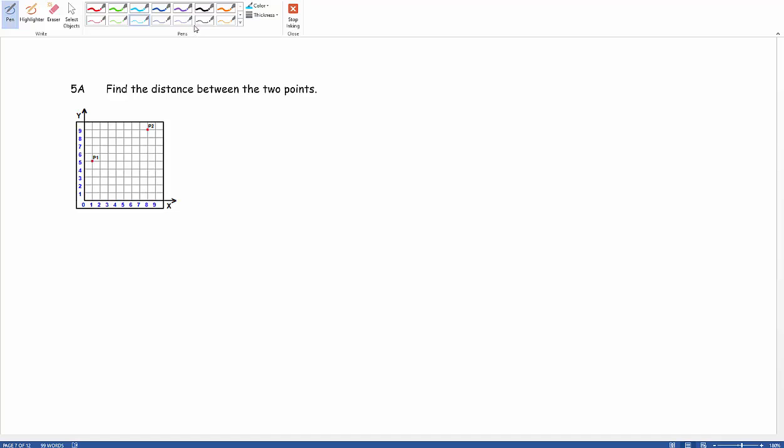Before we actually begin trying to find any distances, we'll first label these points. So when we look at this first point, P1, we notice that it is at (1, 5). And this P2 happens to be at (8, 9).